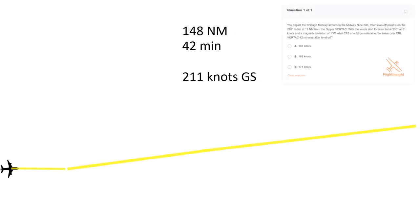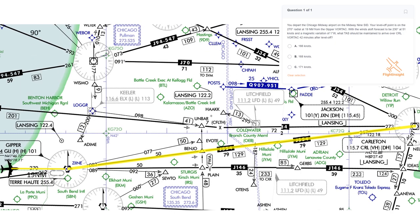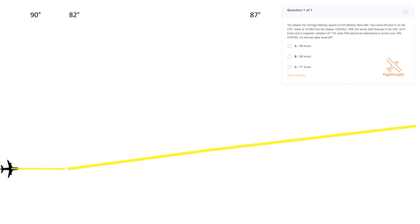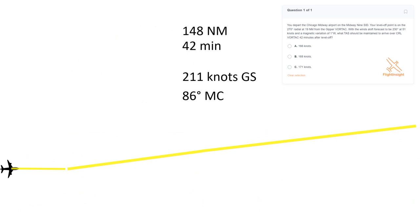211 knots is our required ground speed to get to Carlton in 42 minutes. Now we need to apply the wind and course to convert to true airspeed. Our magnetic course will first be 090 as we fly inbound to Gipper along the 270 radial. Next, the first part of J554 will be outbound along the 082 radial, and finally we'll fly inbound along the 267 radial of Carlton, which is a course of 087. Averaging these, we can use 086 as our mean magnetic course to apply to wind, which is reported in true degrees. With 1 degree west variation, we subtract to get a true course of 085.